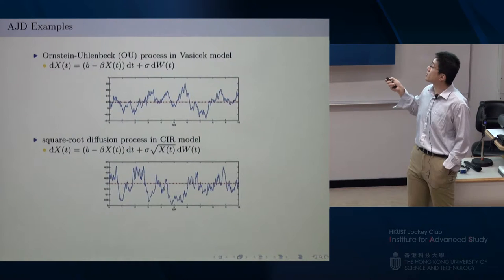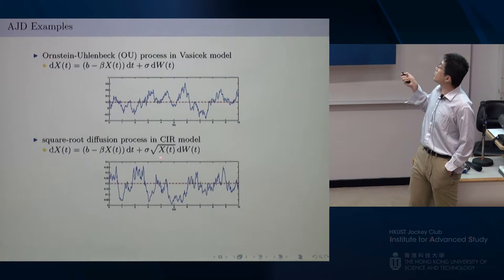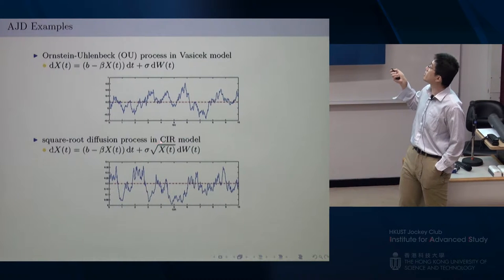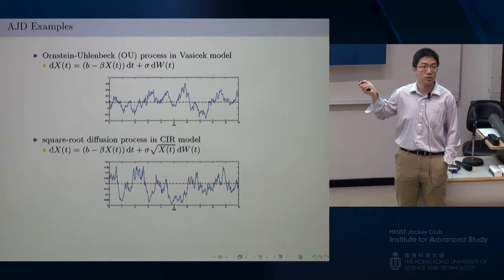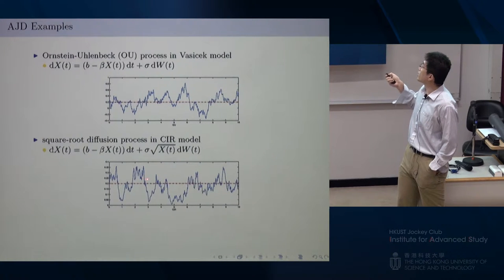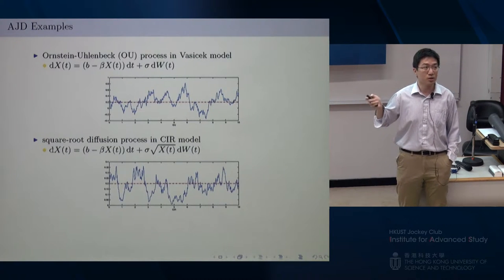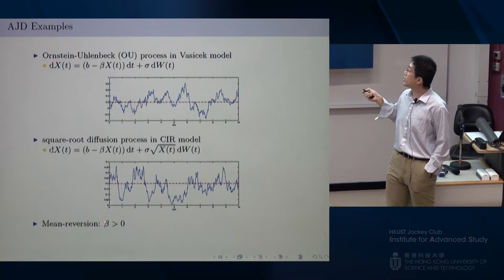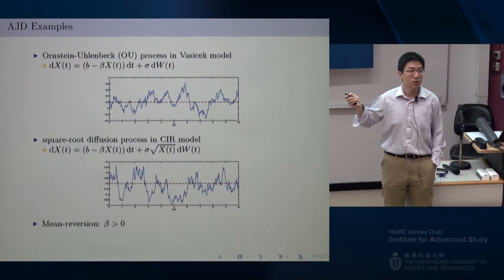Another example is the CIR process, also called square root diffusion. These two processes are very similar — the only difference is the volatility term. The square root term ensures the process remains positive almost surely, so it can be used to model interest rates. This process is also stable, and the reason both processes are stable is because the parameter beta is positive — in other words, these two processes are mean-reverting. They have a long-term mean and the path always tries to return to it.